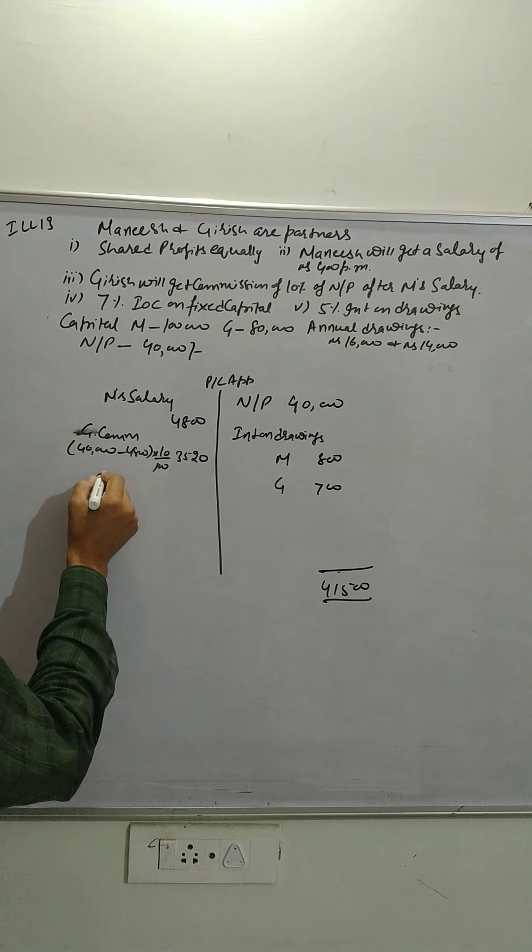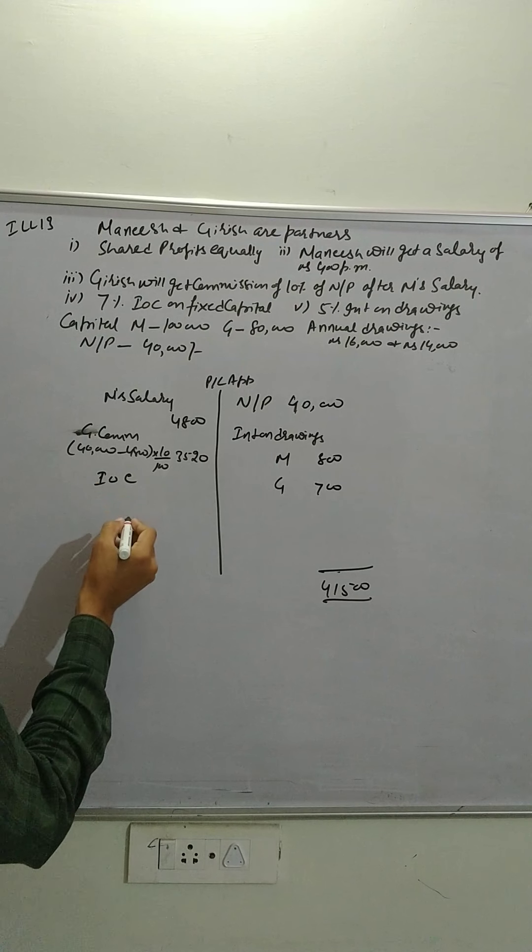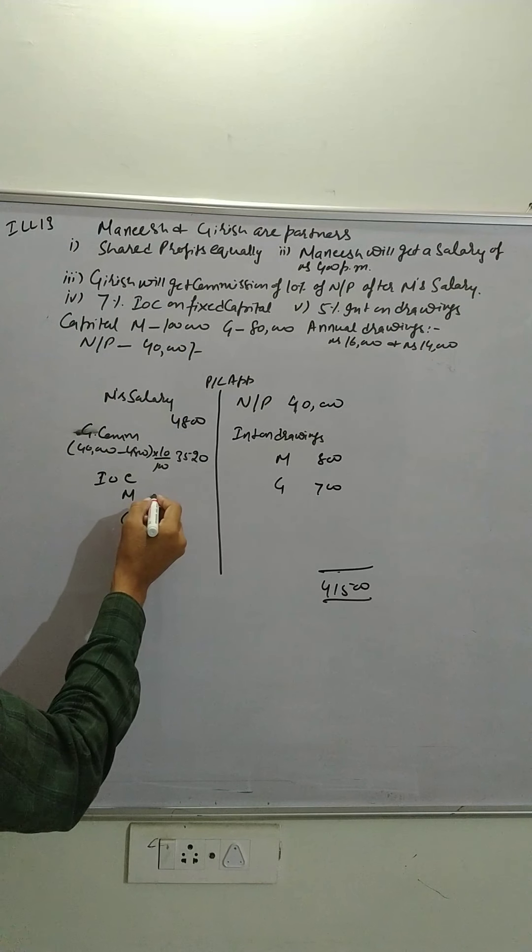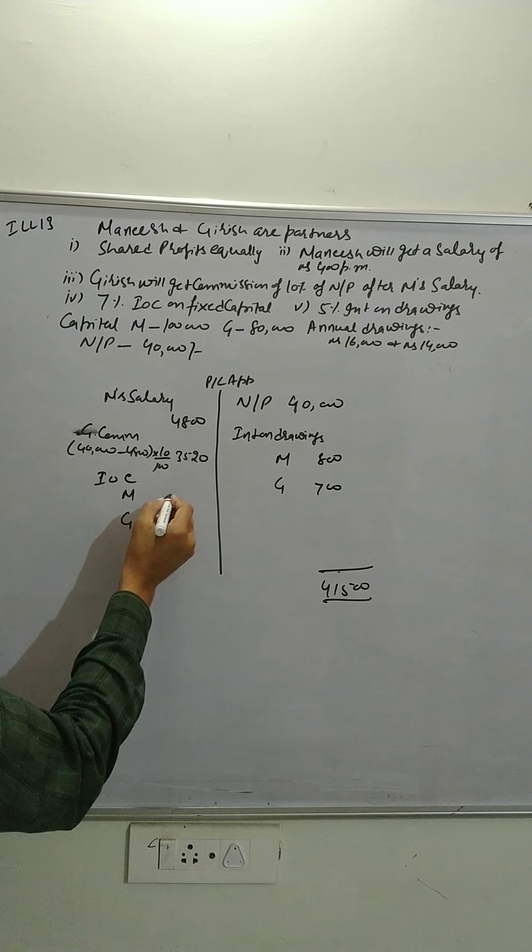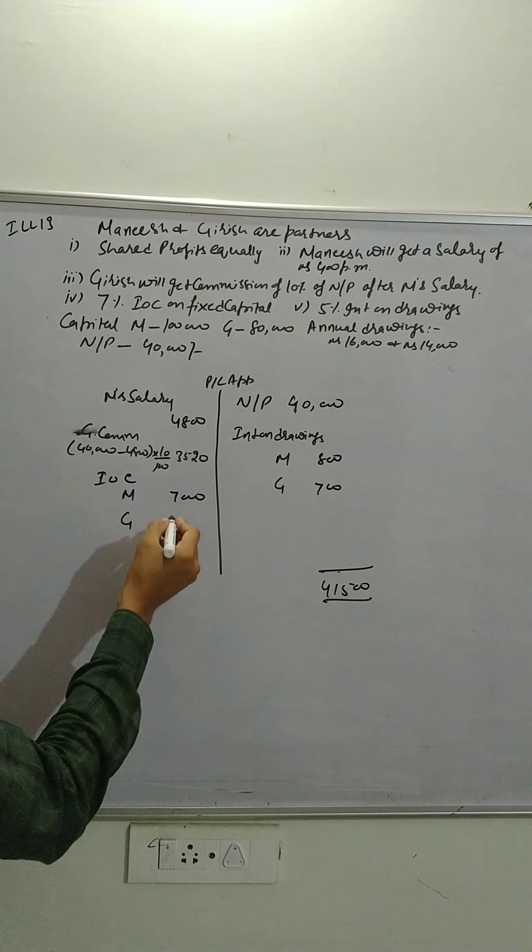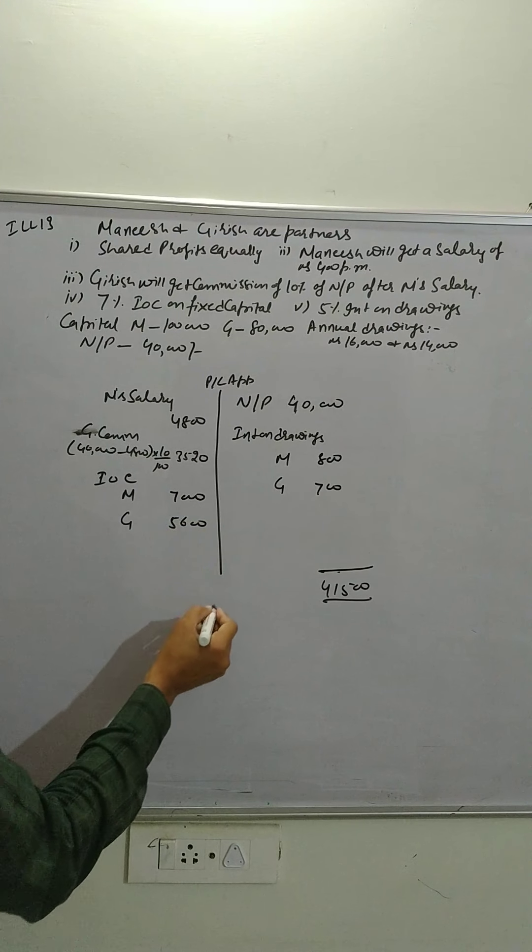Now IOC, that is 7% of 1,07,000, 7% of 80,000, 5,600.